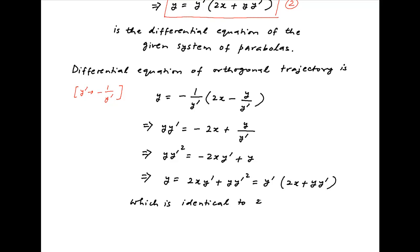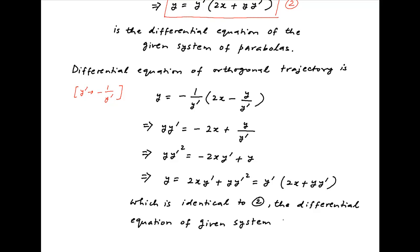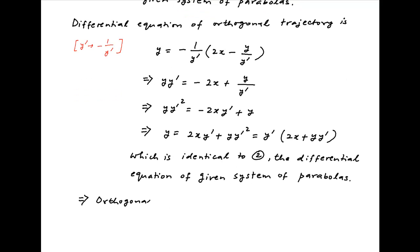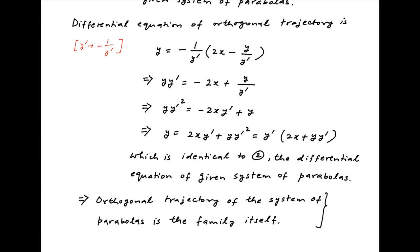Note that this differential equation is identical to Equation 2, which is the differential equation of the given system of parabolas. It therefore follows that the orthogonal trajectory of the given system of parabolas is the family of parabolas itself, which is the required result.